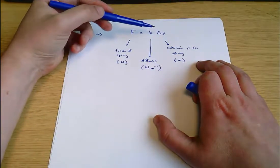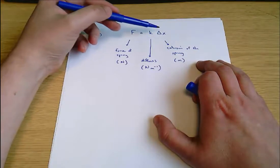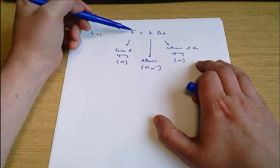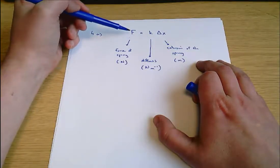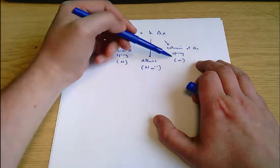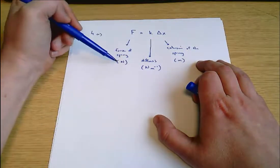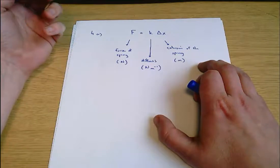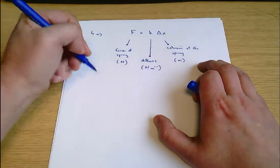And you can work that out if you want by dividing both sides by delta x. k equals F divided by delta x. So it has the units of F divided by the units of delta x. That's newtons per meter. And that's part A answered.